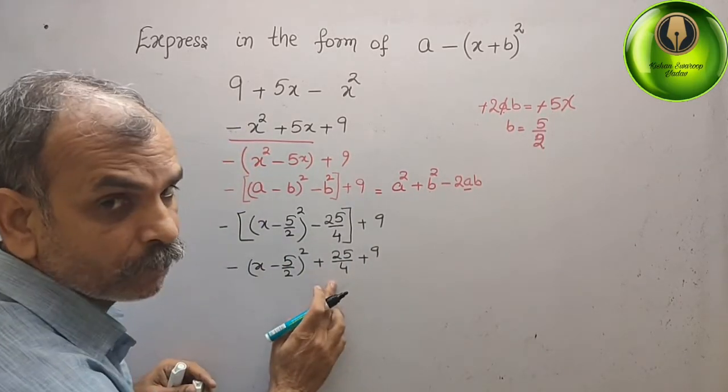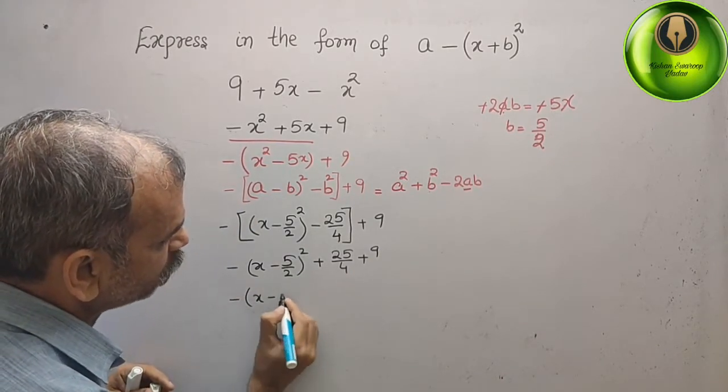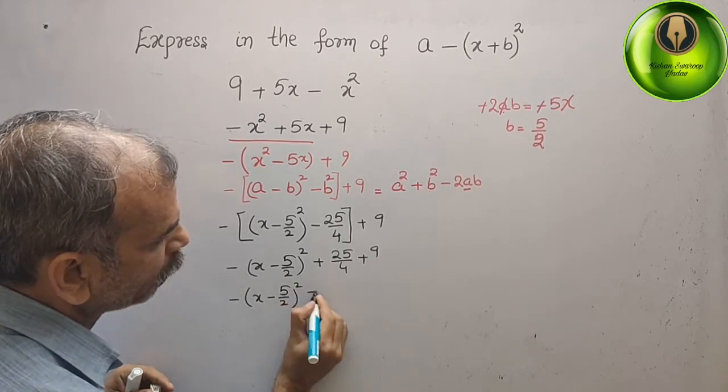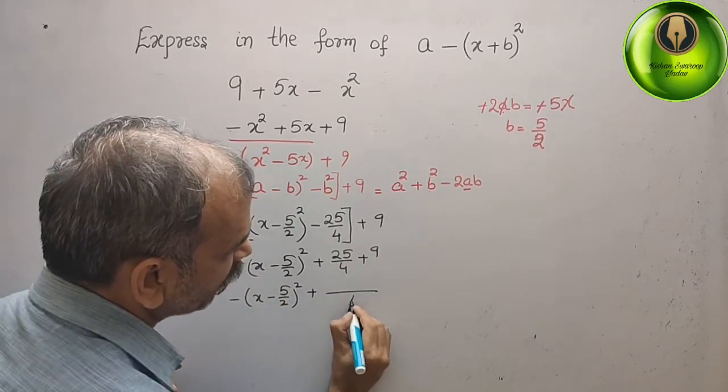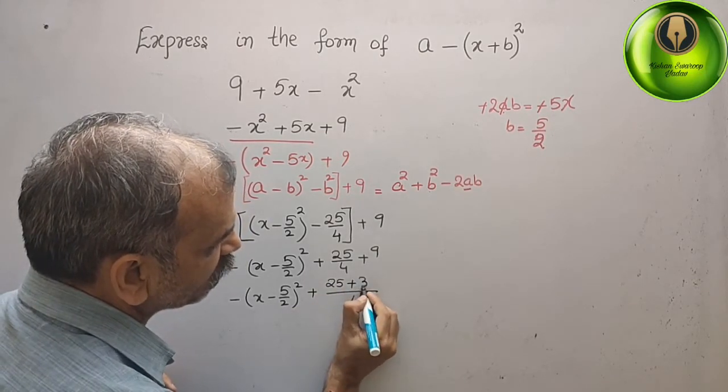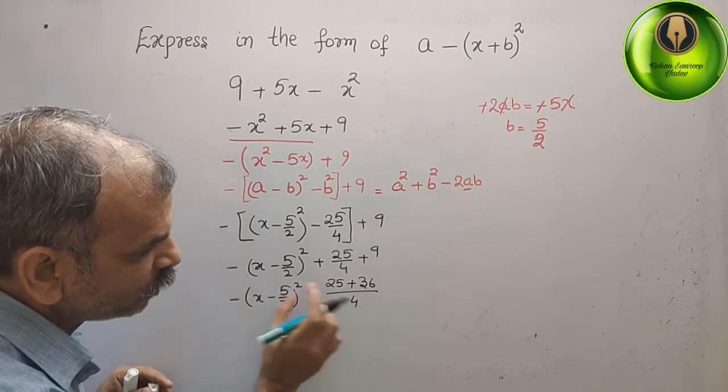Take the LCM here. We will get minus x minus 5 by 2 whole square plus 4 is the LCM. 25 plus 36. Now, bring this to this side.